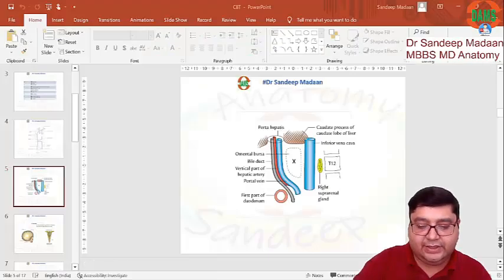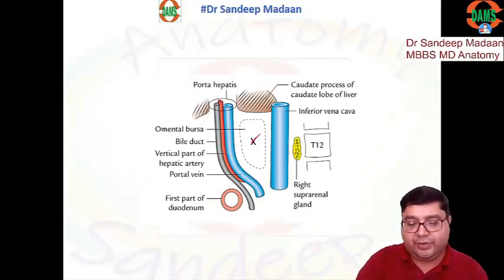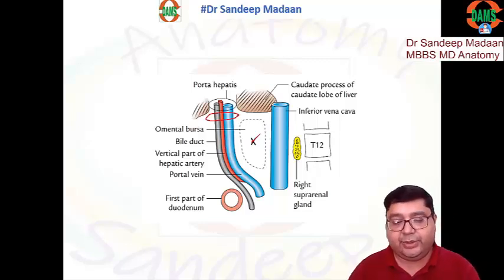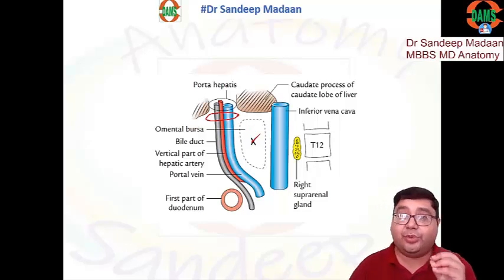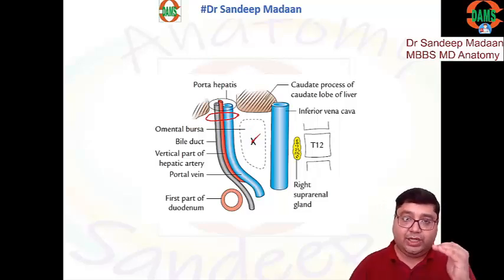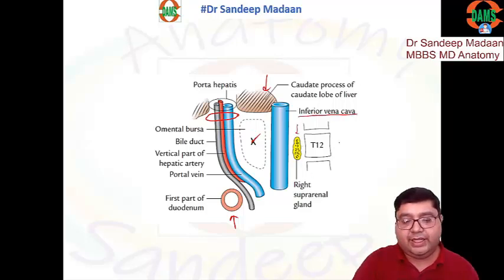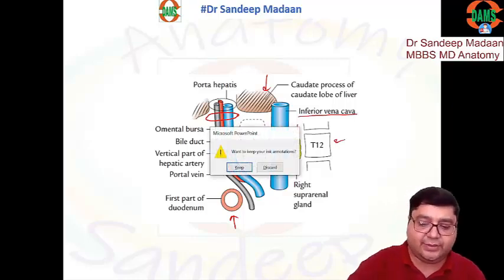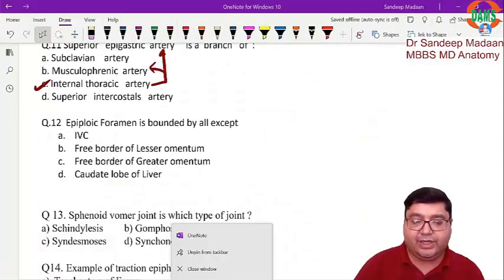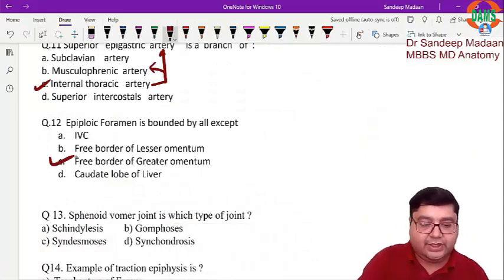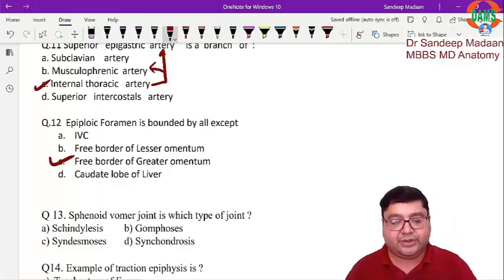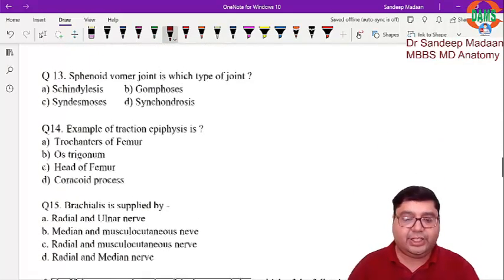The epiploic foramen is bounded by all except the following. Anteriorly lies the right free margin of the lesser omentum (not the greater omentum), which contains the portal triad structures. Below is the first part of the duodenum, above is the caudate lobe of the liver, and behind is the IVC, right suprarenal gland, and T12 vertebra. The answer is the free edge of the greater omentum.